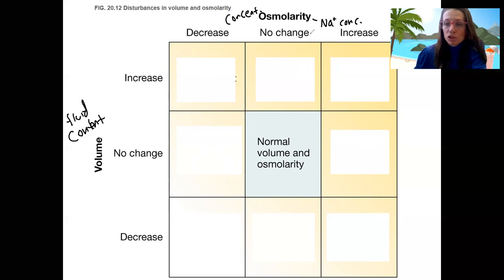The total amount of sodium does determine volume and therefore blood pressure. There's overlap between the two, but we can have dysregulation of them separately. In the middle here is our normal volume and osmolarity.